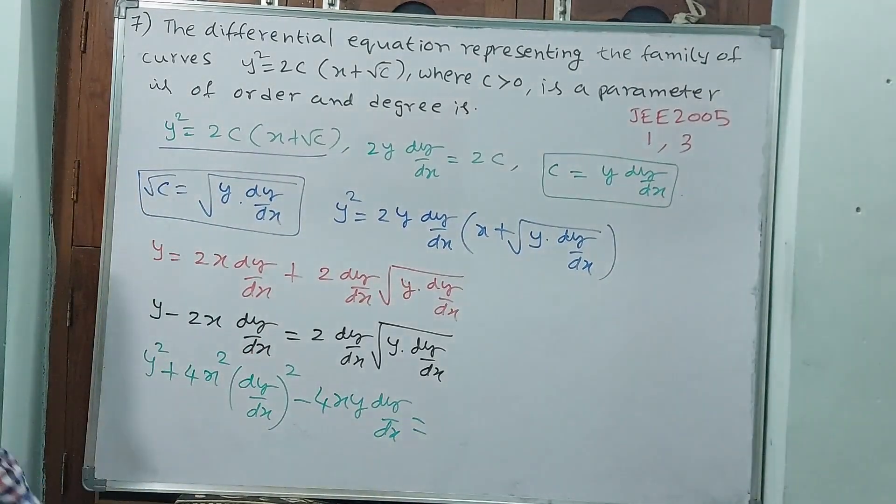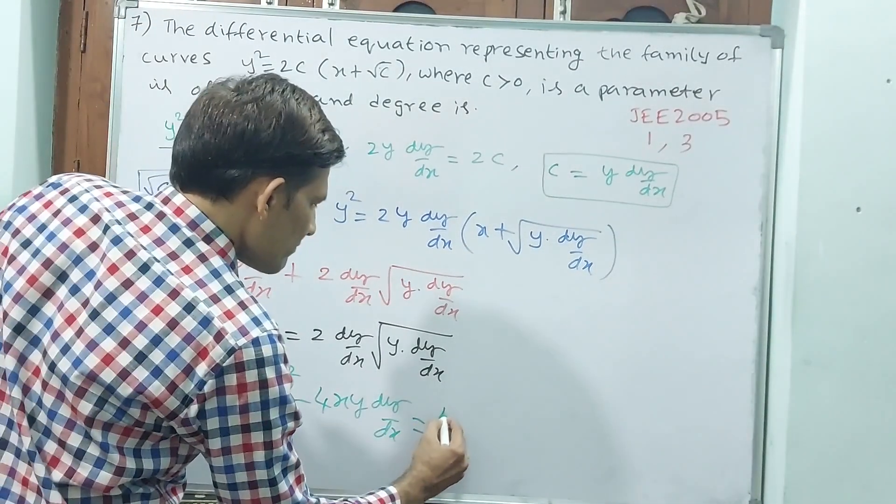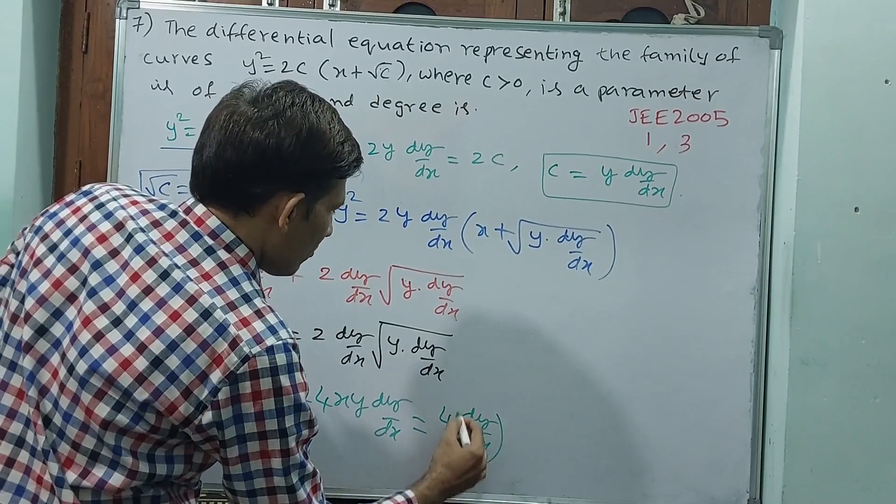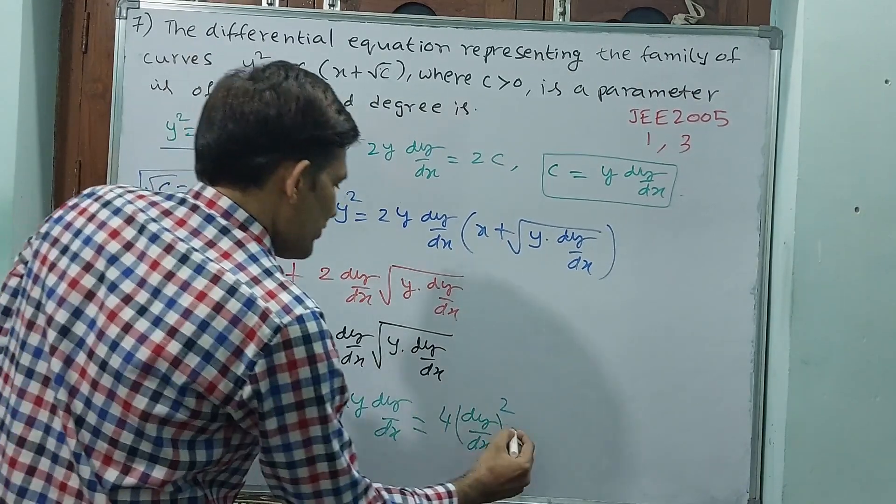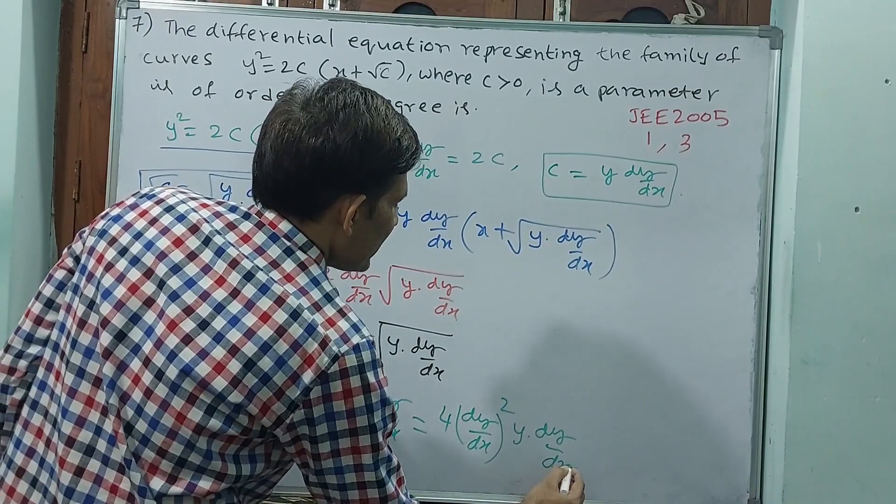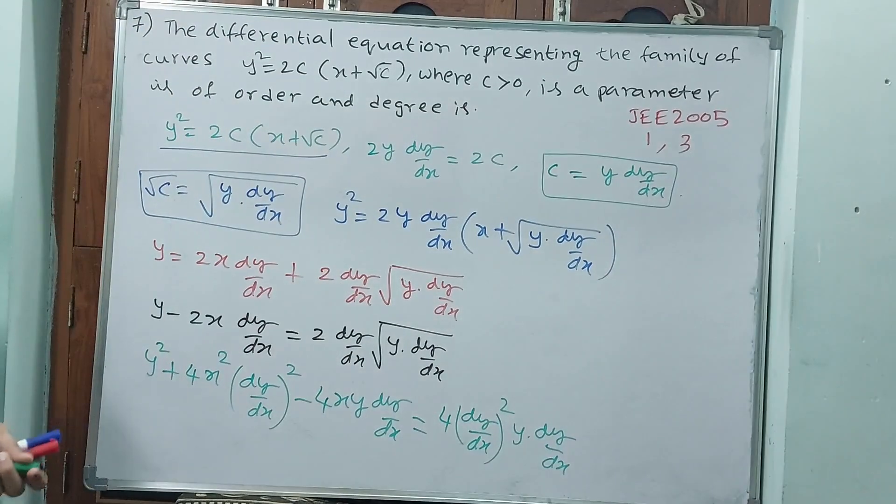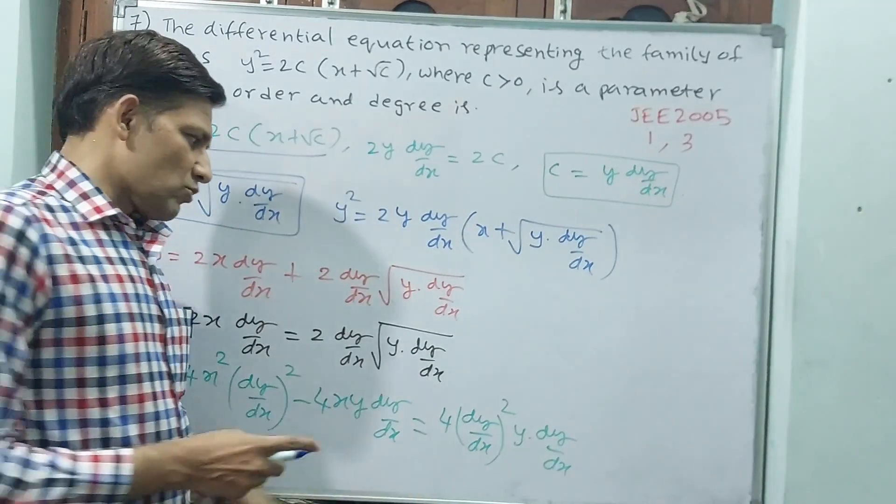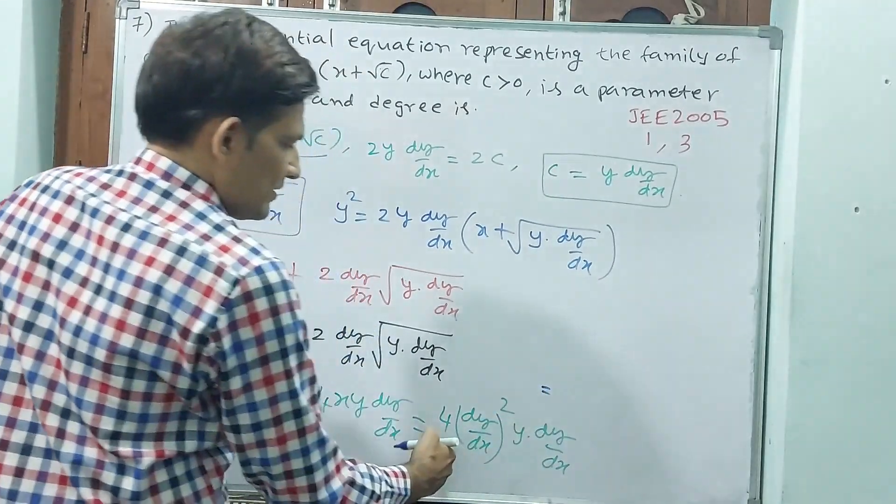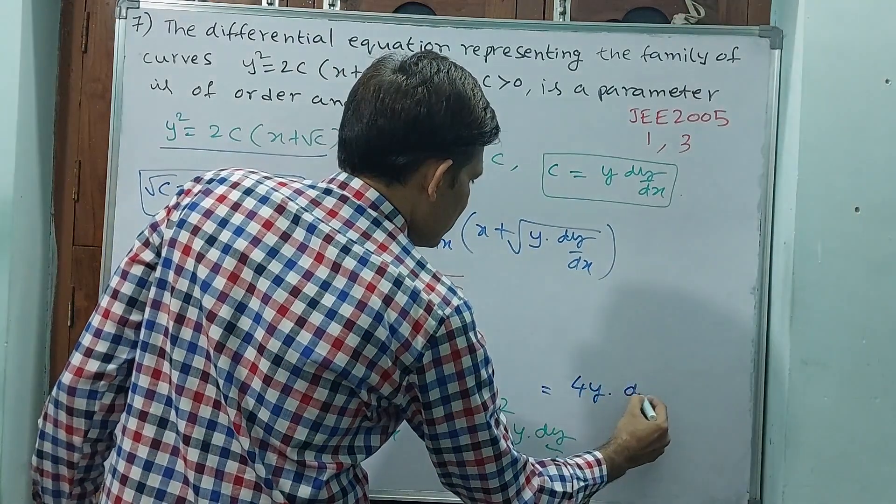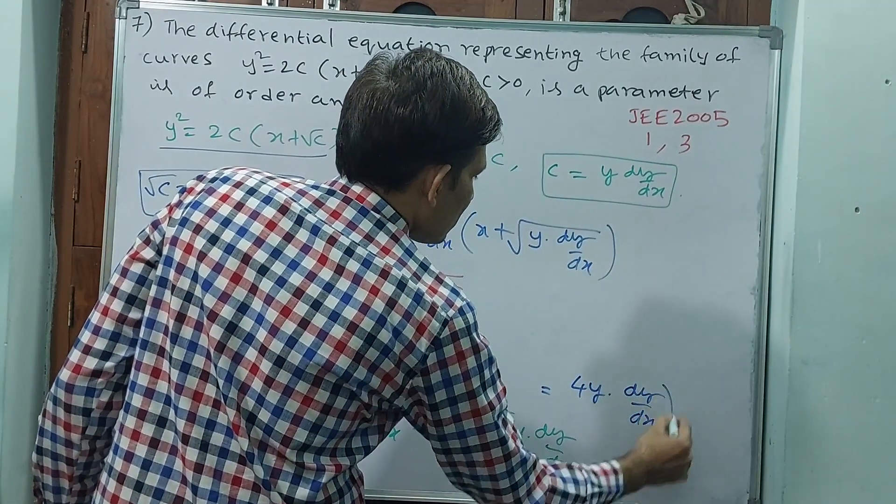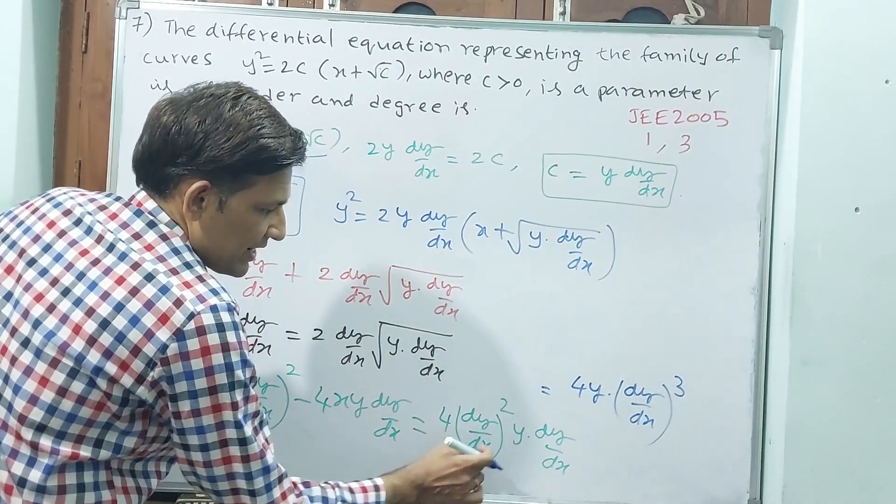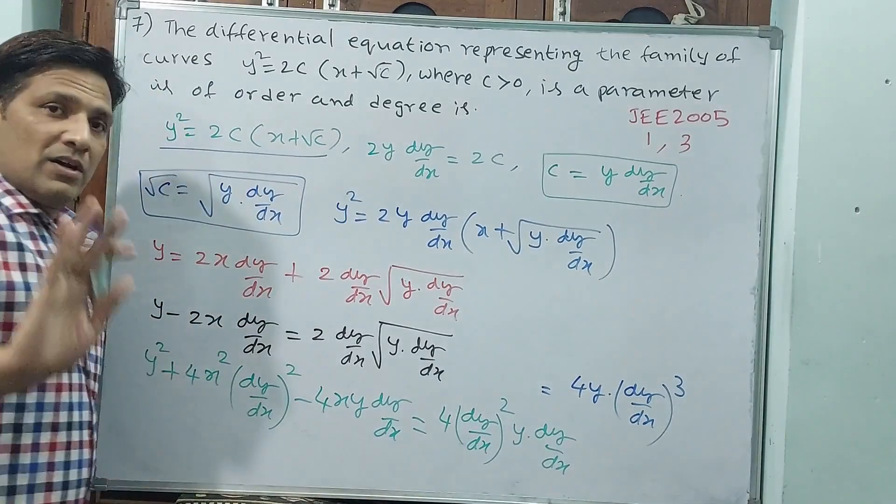This side what will happen? 4(dy/dx)²·y·dy/dx. RHS only I am writing again: RHS = 4y(dy/dx)³. What is the same? dy/dx, dy/dx, dy/dx = 4y(dy/dx)³. Now you stop.